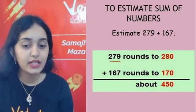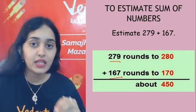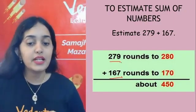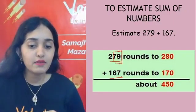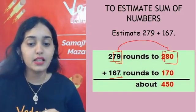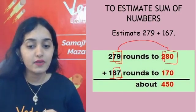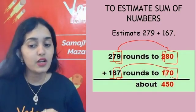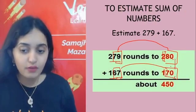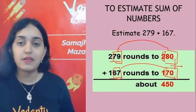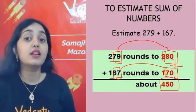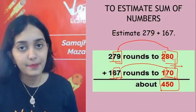Suppose I have to add two numbers: 279 and 167. I round them off to the nearest 10. 279 rounded to nearest 10 — 79 becomes 80, so 279 becomes 280. 167 rounded to nearest 10 — 67 becomes 70, so 167 becomes 170. Now I add the rounded numbers: 280 + 170 = 440. So 440 is the estimated sum.